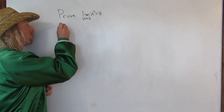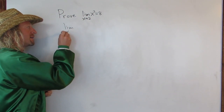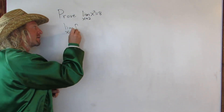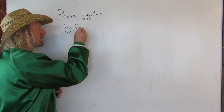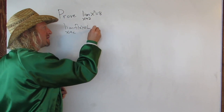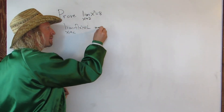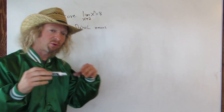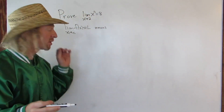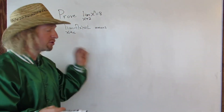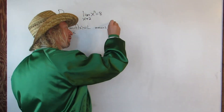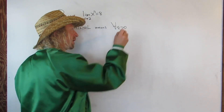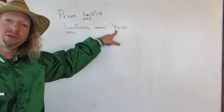We'll say that the limit as x approaches c of f of x is equal to L. This means I'm going to use some notation from math, some more advanced notation. We're going to use quantifiers. So this means for all epsilon greater than 0. That symbol means for all.